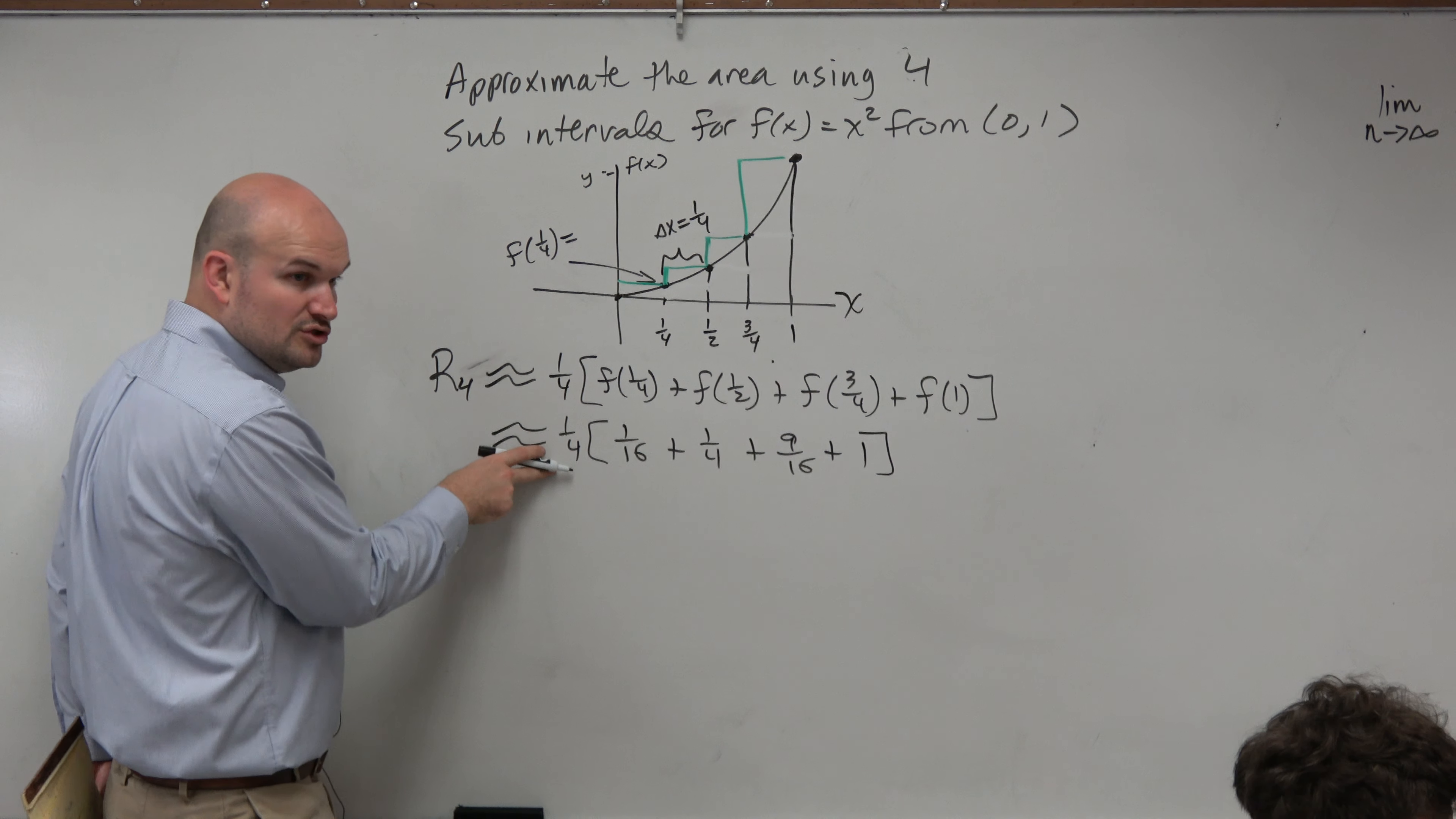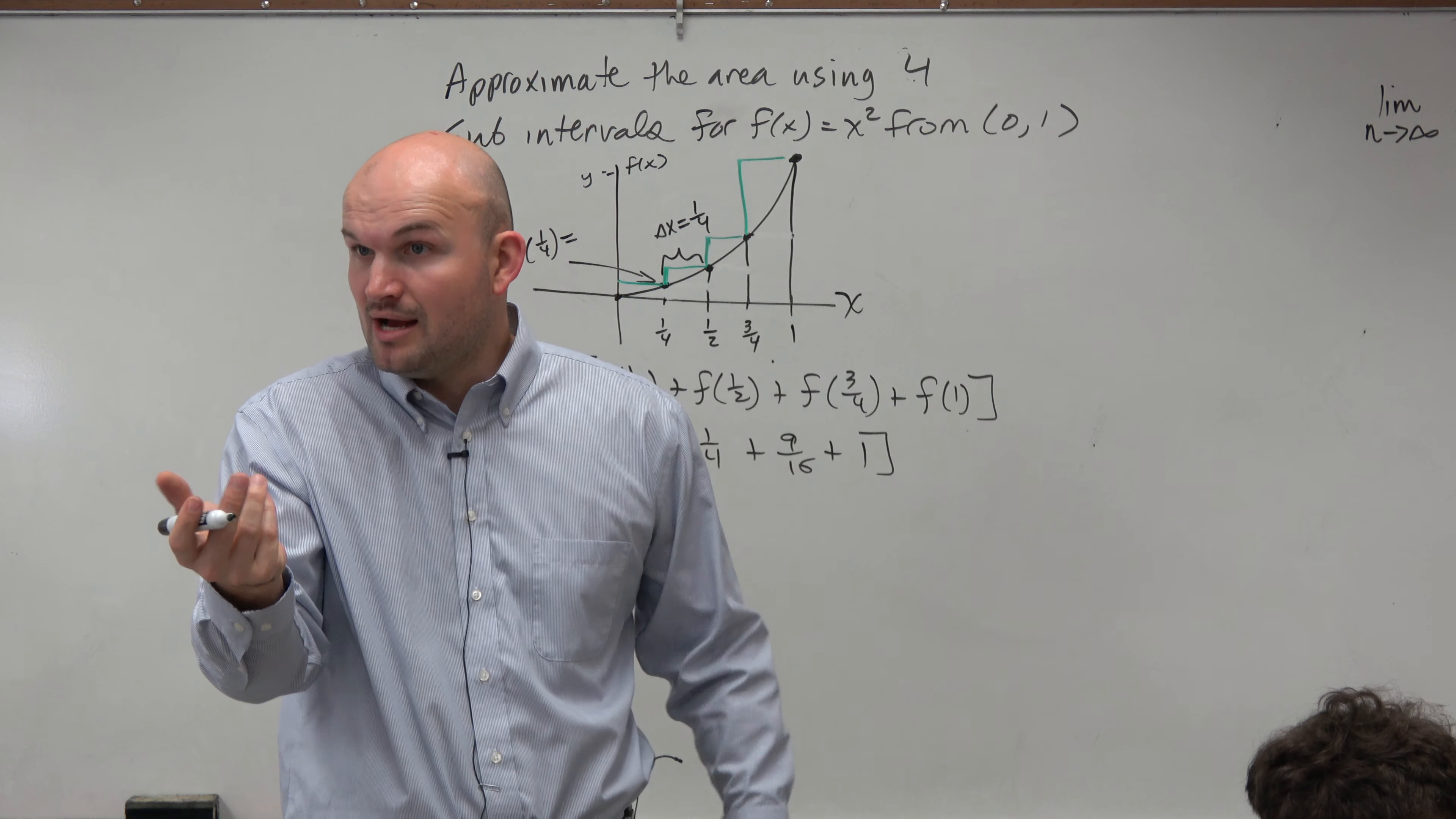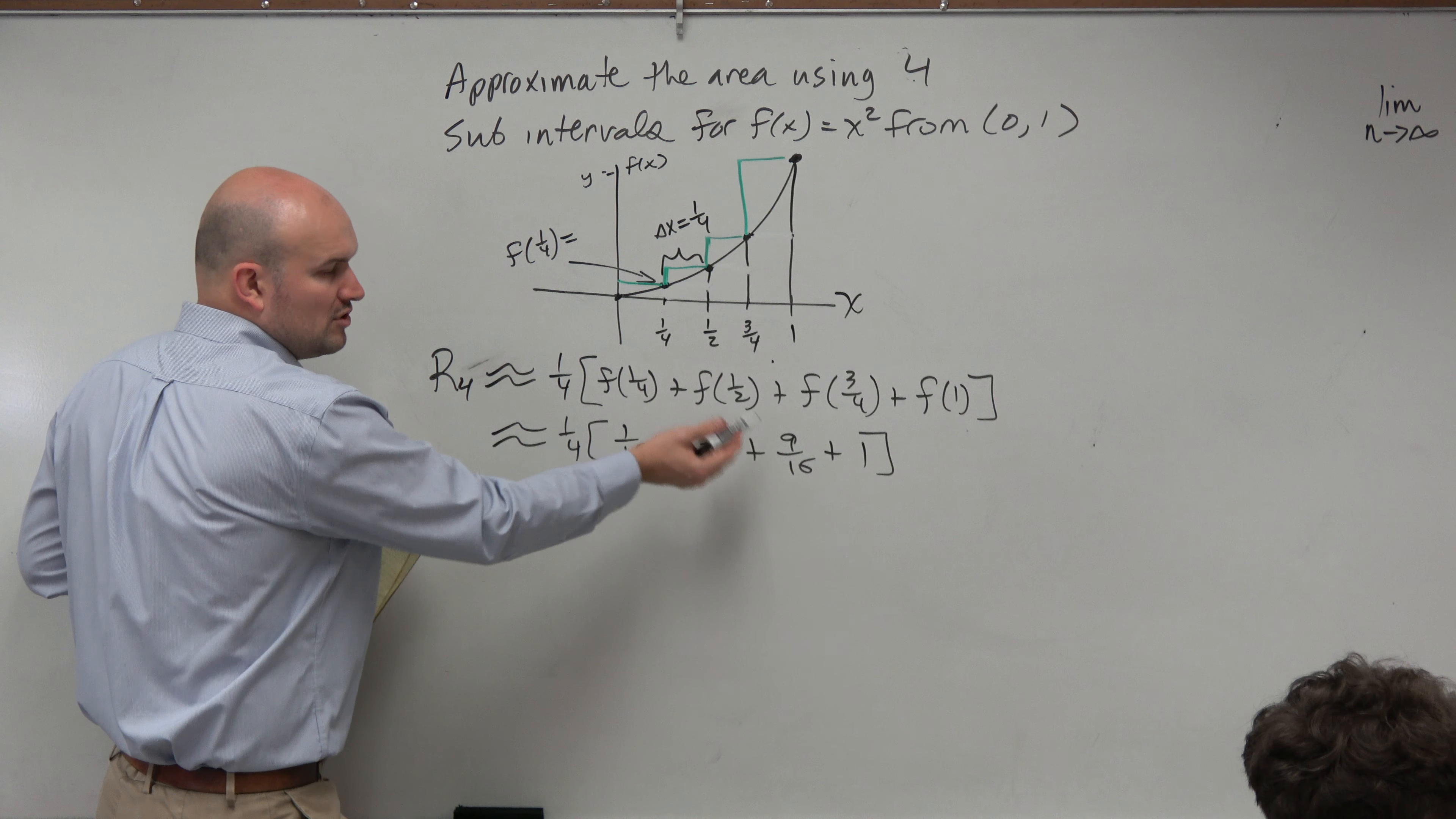So there, right there, is you showing your method. And if you guys remember looking at the scoring guidelines, they want to see your work, your method. Like, how are you arriving at your answer, right? Usually, the answer is a separate point, and then the use of method is another point. This shows you your use of your method, right? This is showing you what you're doing. So you can see that you're approximating it, and we have four subintervals.